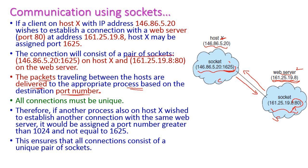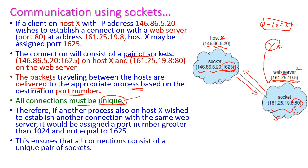All connections must be unique. We have to assign a different port number for all connections. Suppose if host Y also wants to connect with the web server, then we have to assign a different port number to host Y — other than 0 to 1023 — and we should not assign 1625 again, because all ports must be unique. This ensures all connections consist of a unique pair of sockets.